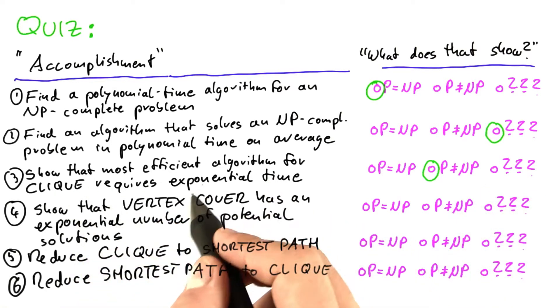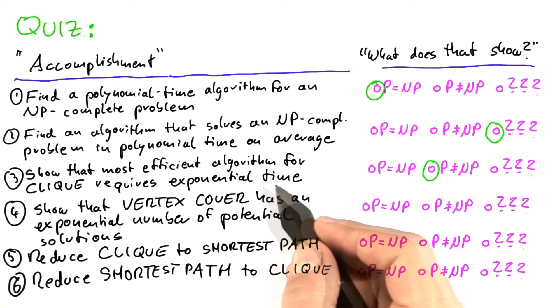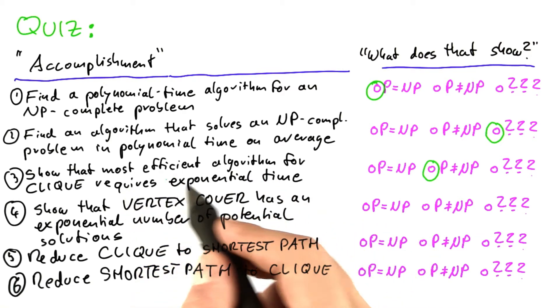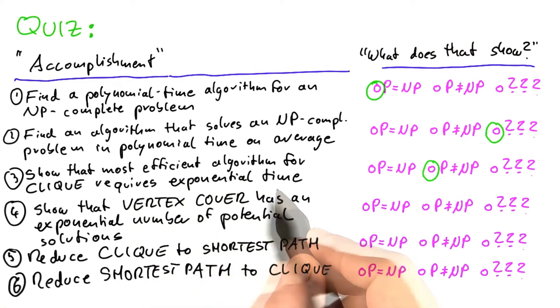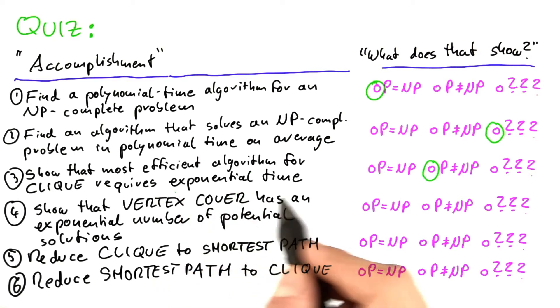Of course, as nice as it would be to show this, it would also be quite difficult to prove because you would have to show that, no matter what algorithm you come up with, it always requires exponential time. That would be extremely hard to do because you would have to consider any algorithm, even algorithms that haven't been invented yet, so to say.